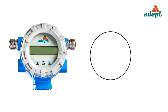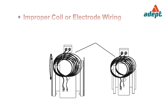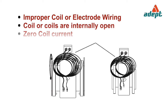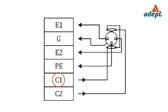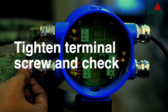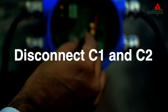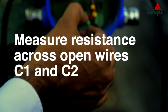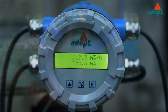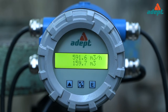Flow meter does not respond to change in flow. Possible causes: improper coil or electrode wiring, coil or coils are internally open, or zero coil current. Corrective actions: confirm that C1, C2, E1, E2, and G wires are correctly inserted into respective terminals at the transmitter and flow tube end, and tighten the terminal screws and check. Disconnect C1 and C2 at the transmitter; measure the resistance across open wires C1 and C2 — it should be within the specified range as mentioned in the manual.